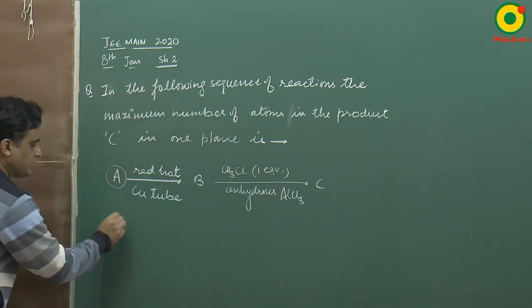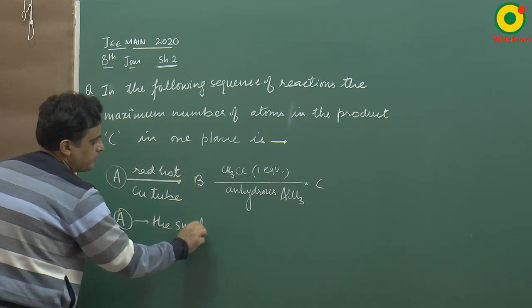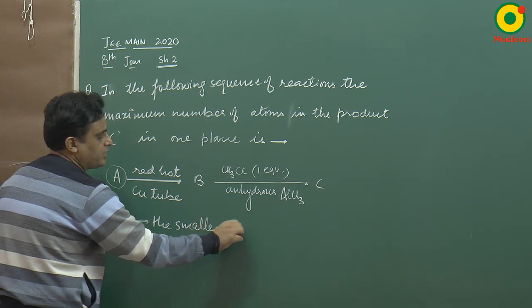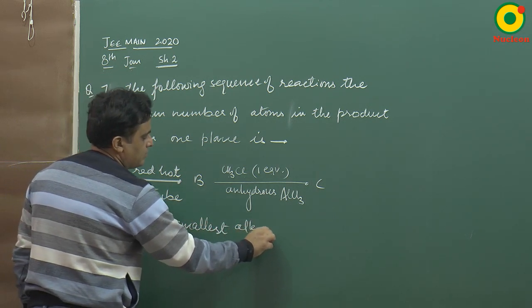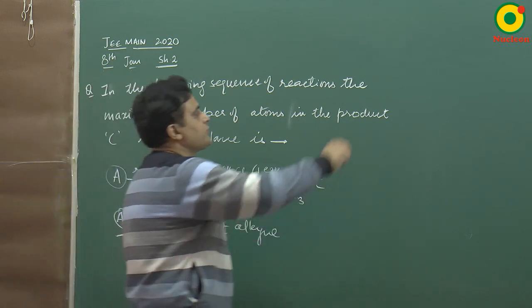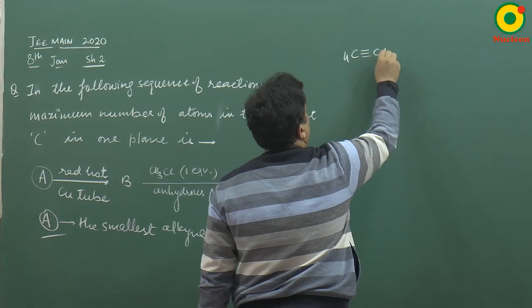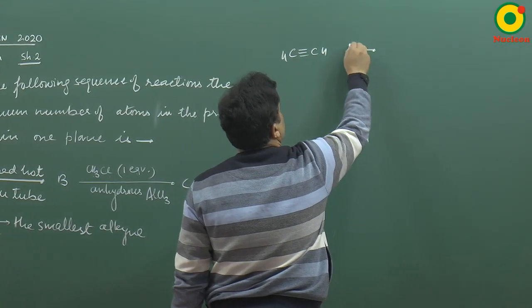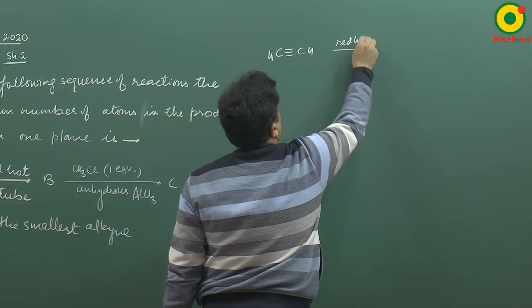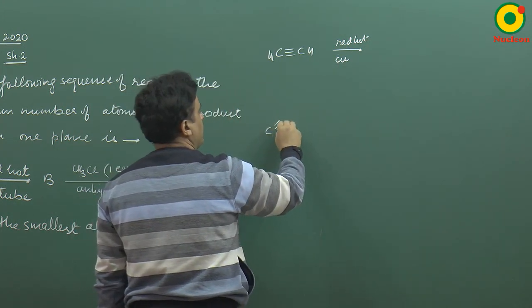A is the smallest alkyne. A is acetylene. If you take A as acetylene, then red hot copper—if we pass it through, then this is like CH≡CH.